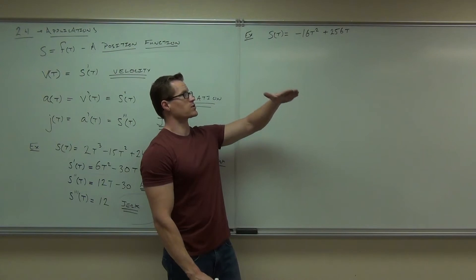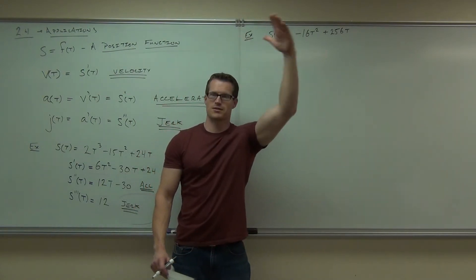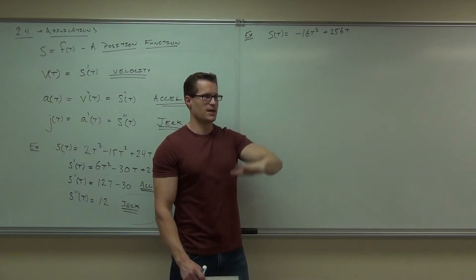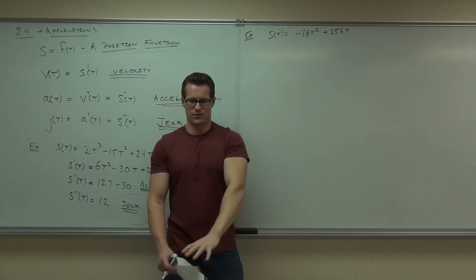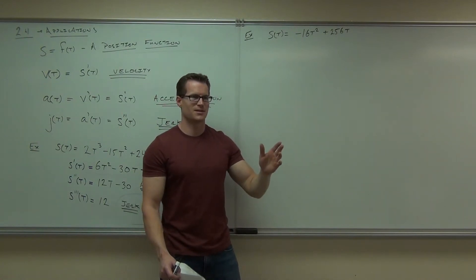If it was like plus 500, that would be kind of cool. We shoot off of a cliff. Or if we had negative 350, we shoot from under the ground and it shoots up. Probably kills some people, but whatever. It was pretty.